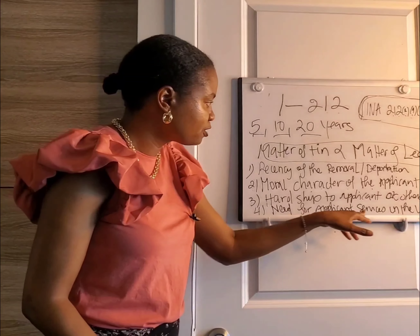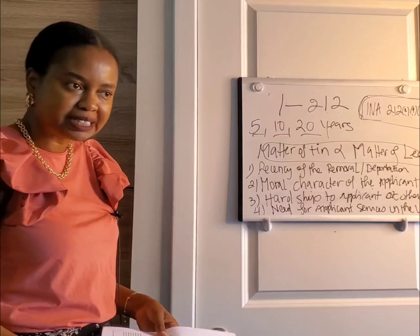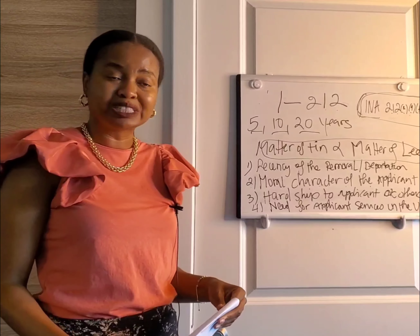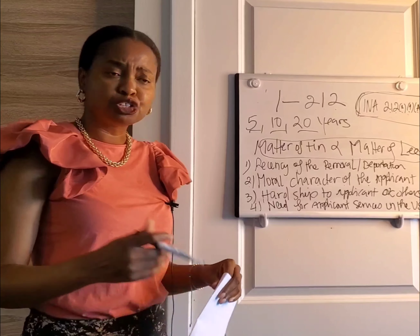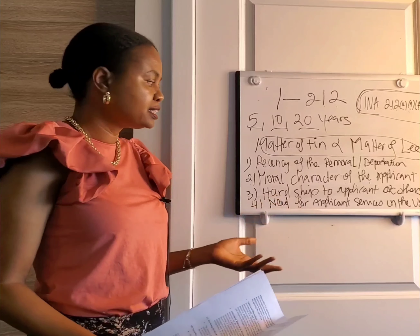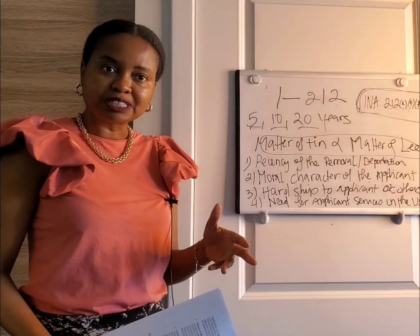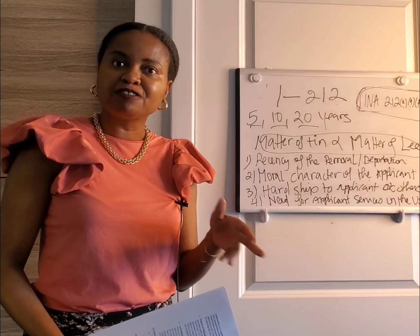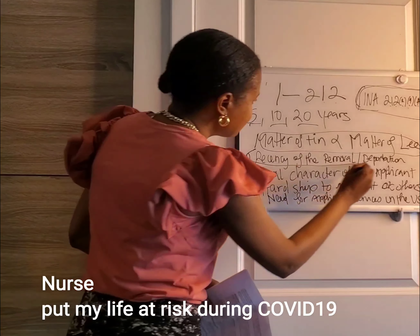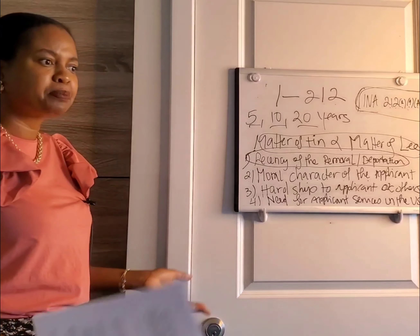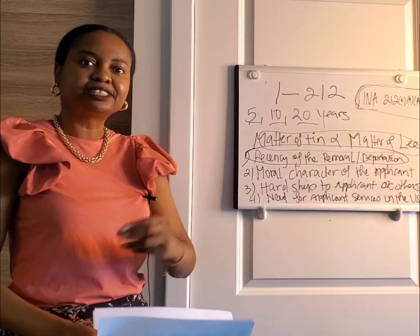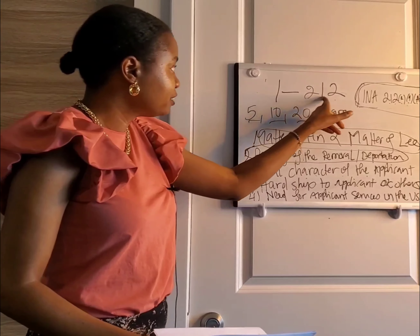Lastly, they look at the need for the applicant's services in the U.S. Are you really valuable here? What type of job were you working when you left? For example, if somebody was a nurse and got removed after serving especially during COVID-19 — they put their life at risk for other people — they can say: 'I was a nurse, I have a license, I served during COVID-19.' And time — this is the most important one — time has lapsed. Two years has passed. Can you give me permission to reapply? Those are the things they look at when filing this form.